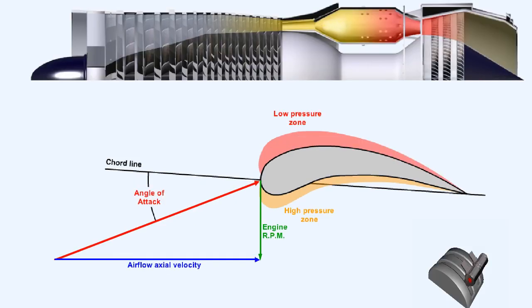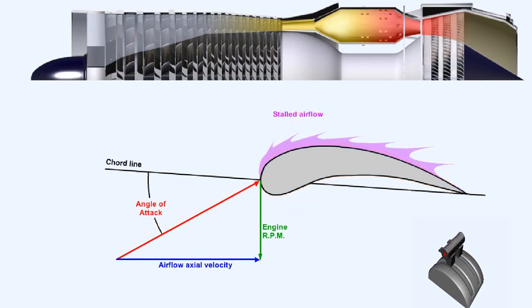Excessive fuel flow, which may be caused by abrupt throttle opening during an attempt to gain rapid engine acceleration. The back pressure generated in the combustion chamber may rise to the extent that it will cause a reduction in the axial velocity of the air passing through the compressor.